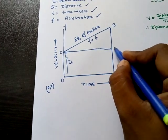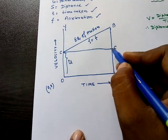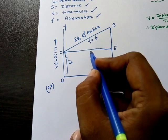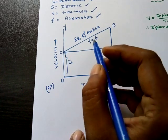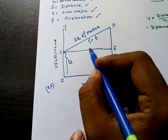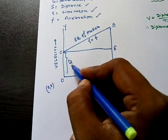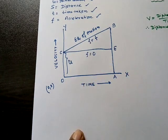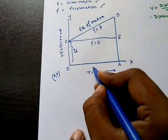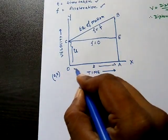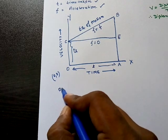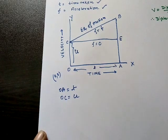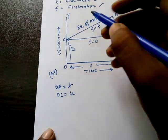The line CE represents the equation of motion of a body moving with initial velocity u but with no acceleration, so f equals zero. Here OA represents the time taken t, and OC equals u.